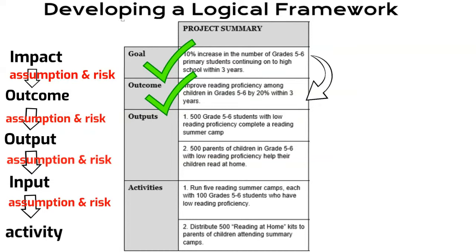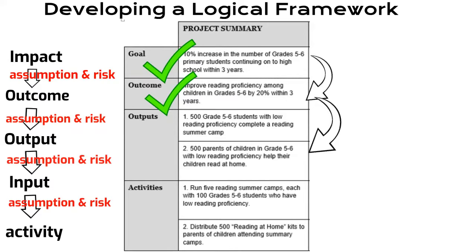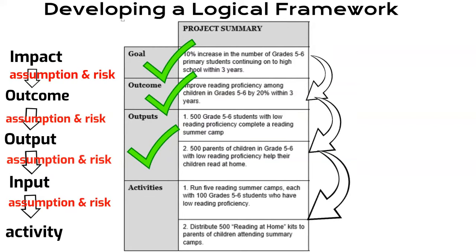The outcome cannot be achieved until grade 5 and 6 students with low reading proficiency complete a reading summer camp, and also the parents of the children equally need to help them read at home — so these are the outputs. To achieve the outputs, the project has to run five reading summer camps for children with low reading proficiency, and also distribute reading materials to those attending the summer reading camp — so these are the activities.